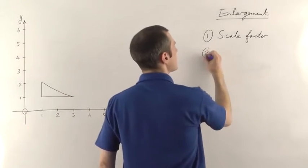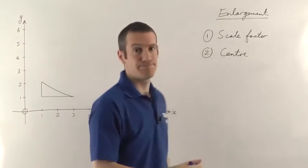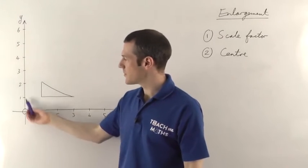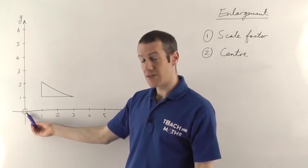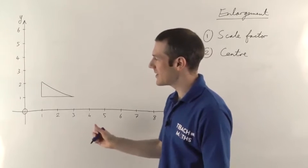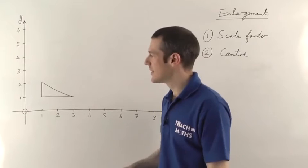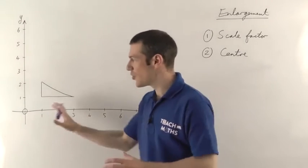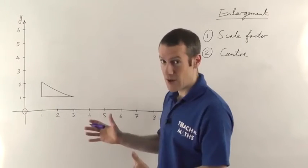That's the first thing you need. The second thing you need to specify is what's known as the centre of enlargement. Very often when they give you an enlargement question, they will specify the origin — that's the point where the two axes cross, zero on both axes — as the centre of enlargement. If that's the case, it makes doing the enlargement much easier. I'm going to show you two different ways of doing this: the easy way when the centre is the origin, and the more difficult way when it's not.